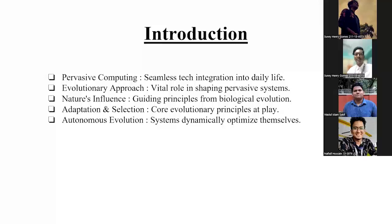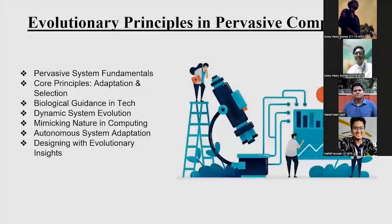Evolutionary principles, like how living things change to survive, are the main ideas behind these systems. Understanding these ideas helps us see how pervasive systems change and get better as things around them change too. This is key to understanding how they are adapting and changing, like living things evolving in nature.